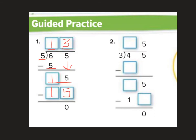We can always use inverse operations to check. So I'm going to do thirteen times five. Five times three is fifteen. Five times one is five. Five plus one is six. So we checked out — sixty-five.